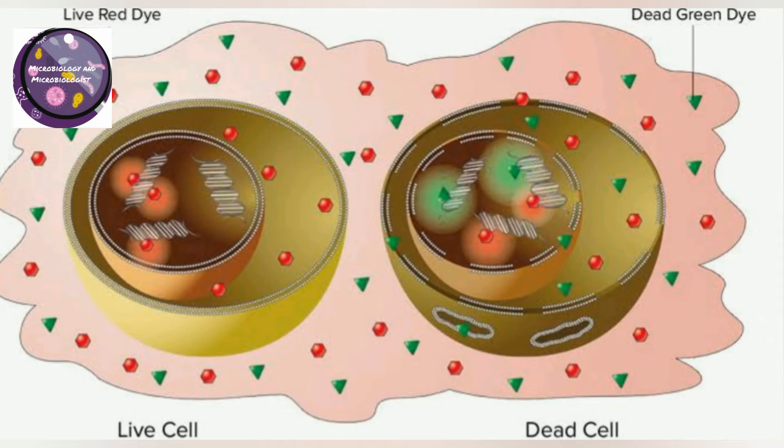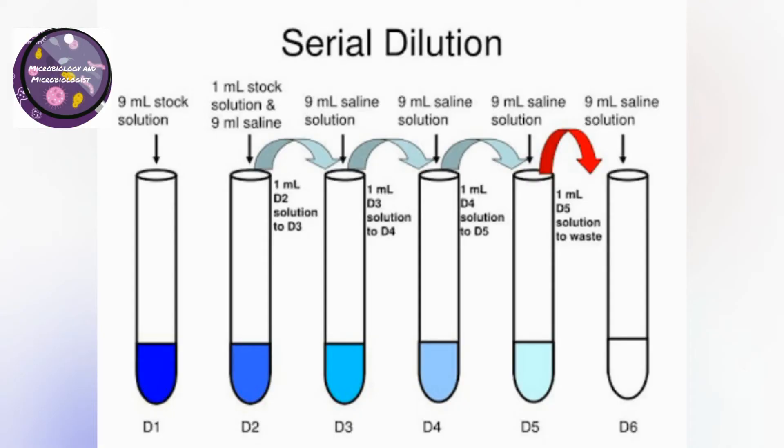A specific concentration is used: 0.9% or 0.85%. This provides osmotic protection for microbial cells.